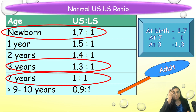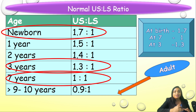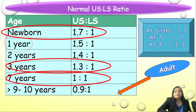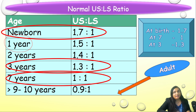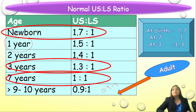The normal upper to lower segment ratio at newborn birth is 1.7:1, as the trunk is much bigger than the legs and arms. At one year (infantile ratio) it is 1.5:1, at 2 years it is 1.4:1, at 3 years it is 1.3:1, and at 7 years it is 1:1. By 9 to 10 years it reaches the adult ratio of 0.9:1. For ease of remembering: at birth it is 1.7, at 3 it is 1.3, and at 7 it is 1.